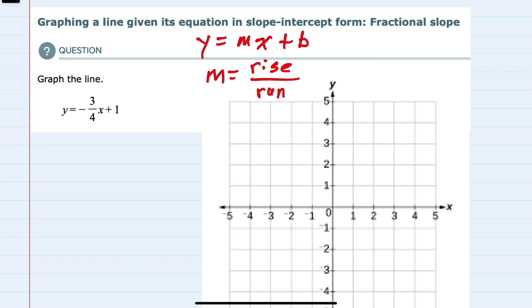So looking at our example here, y equals negative three-fourths x plus 1, the negative three-fourths is our slope, so m equals negative three-fourths. And since I want to think of that as a single fraction, I'm going to write it as negative three over four, just moving the negative to the numerator.